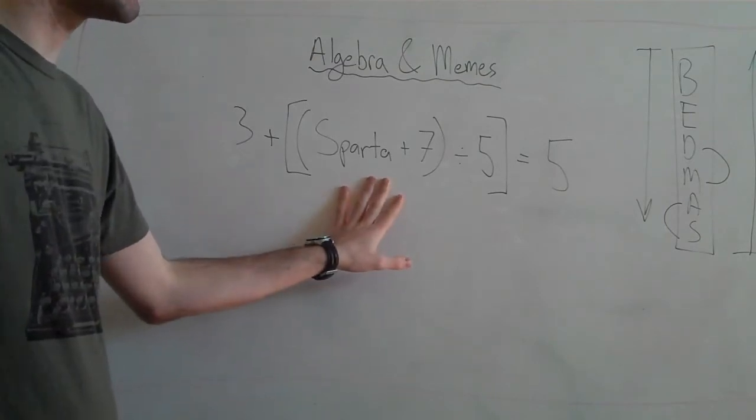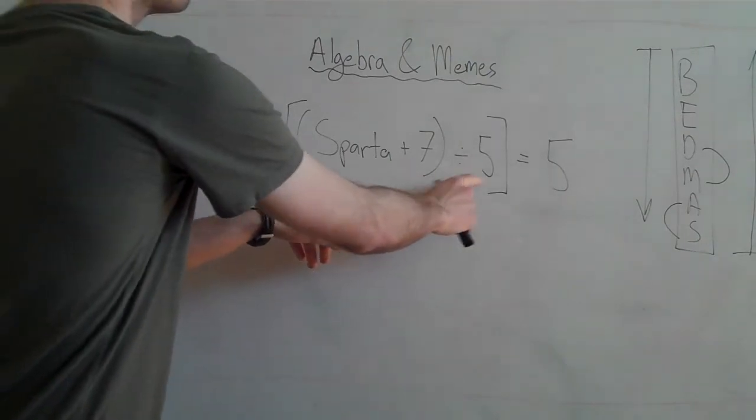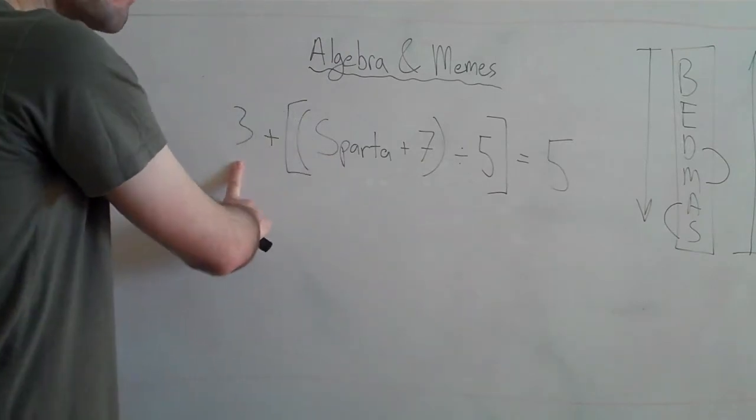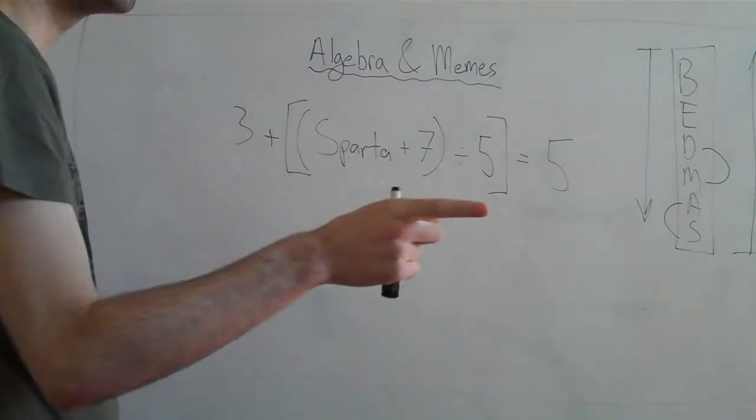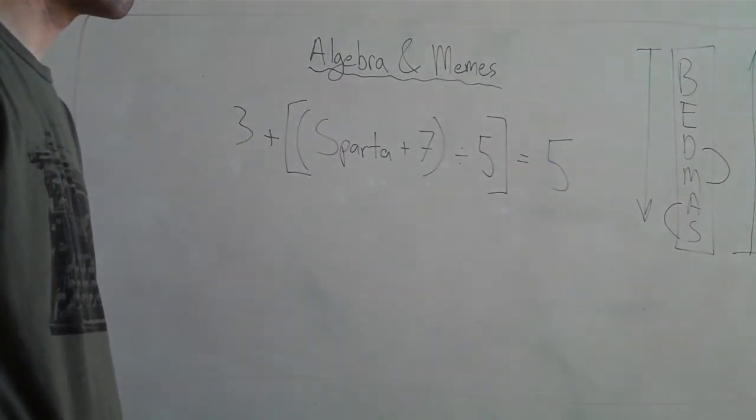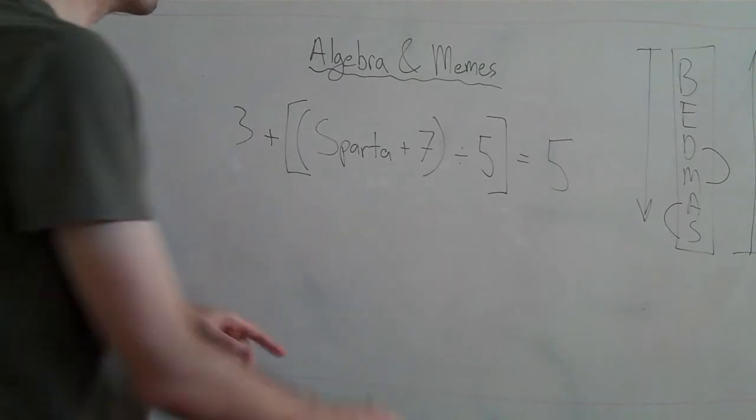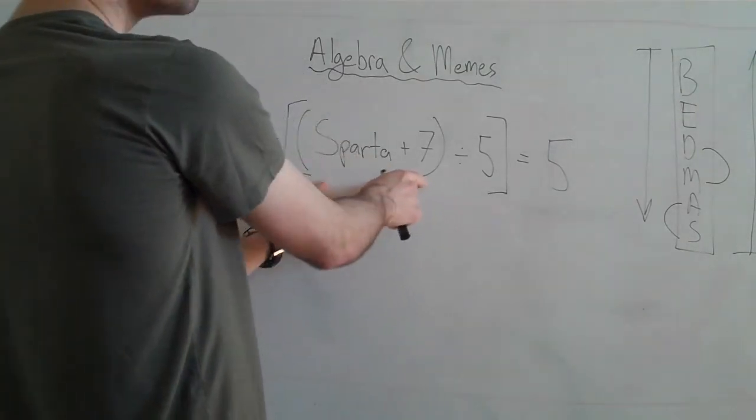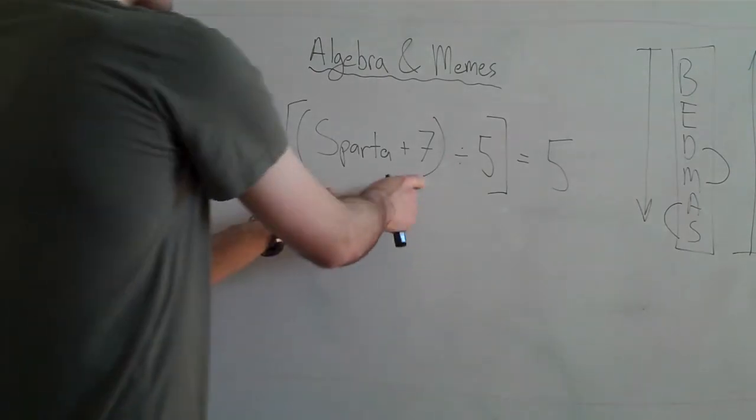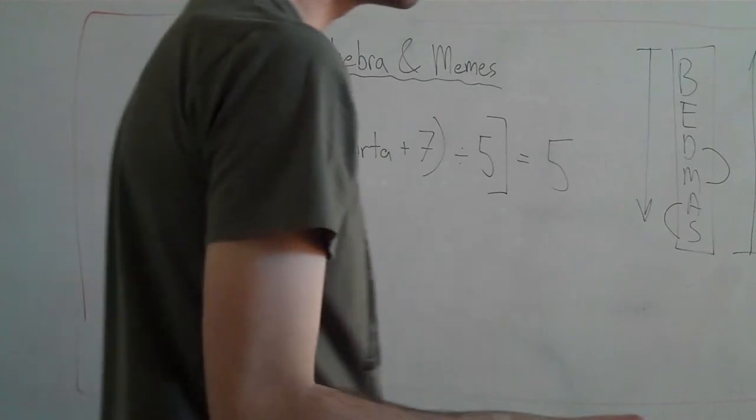Now, take a look here. We have Sparta plus 7 in brackets, divided by 5 in bigger brackets, plus 3 over here. Normally, in BEDMAS, what's the first thing we tackle? The brackets. That's right. The outer brackets or the innermost brackets first? The innermost. We would tackle the innermost brackets first. But, you know what? That's what we're going to do last.